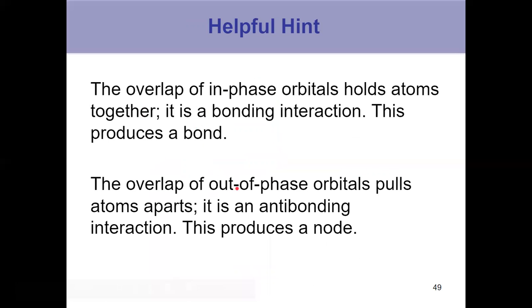And this is old information, but if you don't remember it, overlap of orbitals in phase helps atoms come together. Those are bonding interactions. That's what makes bonds. When they're out of phase, that's contributing to pulling atoms apart, hence anti-bonding, where there's a node between the nuclei. So a lot of that's old information. We knew that from molecular orbital information from gen chem and earlier in the semester.